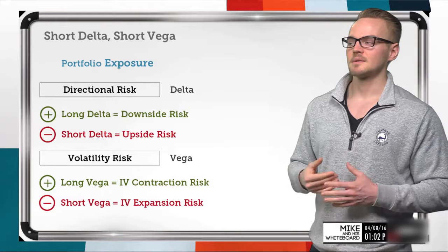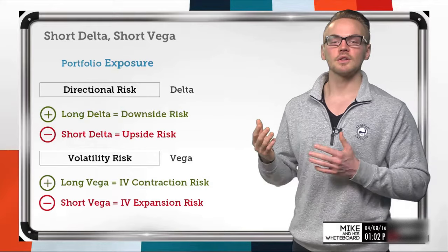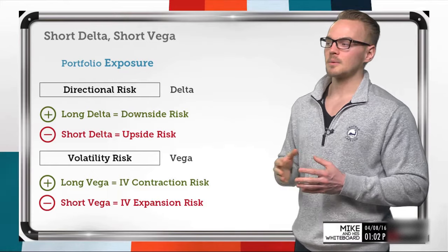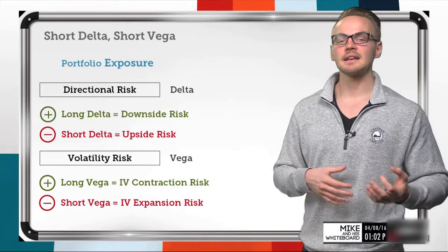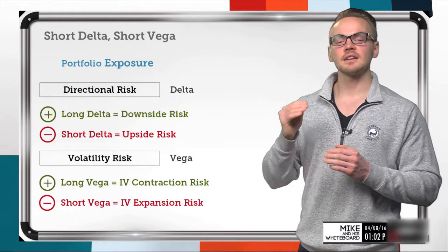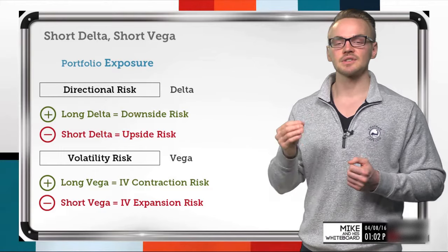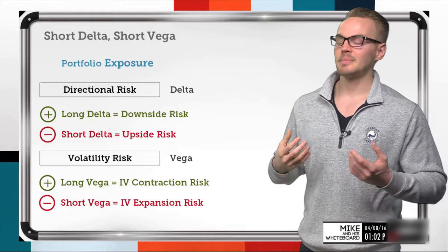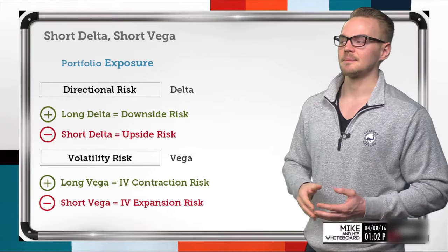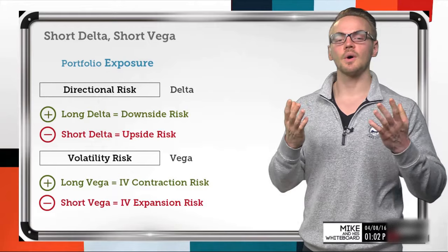On the flip side, if I am short delta, some popular short delta strategies might be a short call spread, a long put diagonal spread, or a poor man's covered put. When I have short delta, my risk is to the upside. If I have a negative delta value and the underlying price increases, it's going to decrease the value of my position. What I want is for the underlying to go down — I'm bearish. My risk is to the upside, the opposite of long delta.